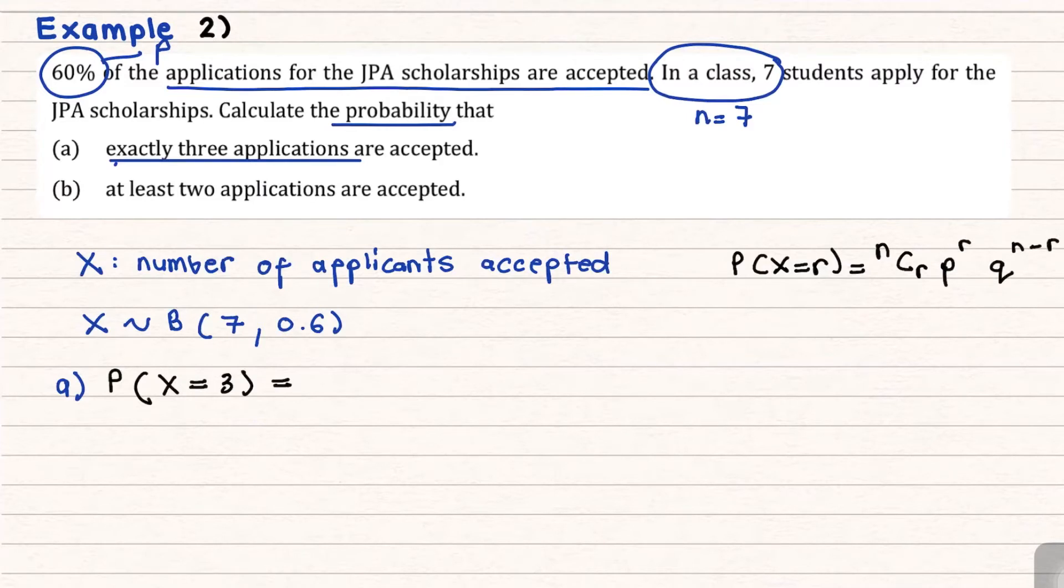Okay, this one I mentioned already like few times. So substitute into the formula. Your N here is 7, choose R is 3, your P is 0.6 power of 3. And your Q, basically 1 minus P would be 1 minus 0.6 would be 0.4. N minus R would be 7 minus 3 equivalent to 4.